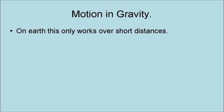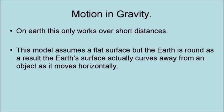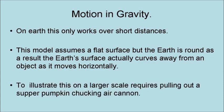If you fire your pumpkin-chunking air cannon at a constant angle, the more power you put behind the shot, the further the pumpkin goes. On Earth, this only works over short distances. This model assumes a flat surface, but the Earth is round, and as a result, the Earth's surface actually curves away from an object as it moves horizontally. To illustrate this on a larger scale, it requires pulling out a super pumpkin-chunking air cannon.